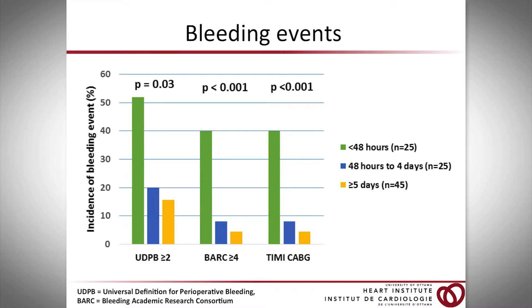When we looked at our bleeding events, we used major definitions including the universal definition of perioperative bleeding, the Bleeding Academic Research Consortium (BARC), and TIMI-CABG bleeding. We see that there is a significantly higher incidence of bleeding in patients who undergo CABG within 48 hours of ticagrelor discontinuation. There is also a significant drop when ticagrelor discontinuation is greater than 48 hours, but there appears to be no significant drop between the cohort who underwent CABG 48 hours to four days versus five days or more after ticagrelor discontinuation.